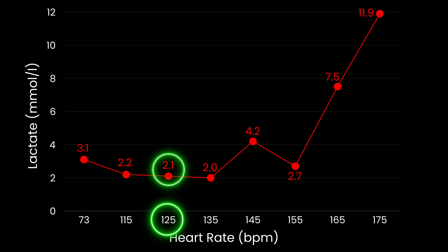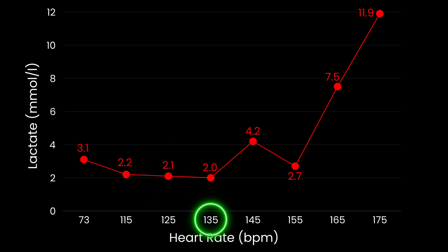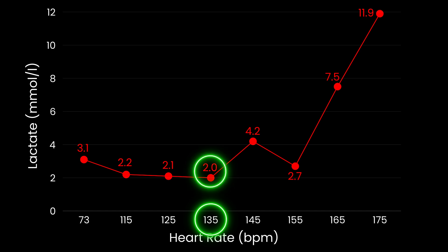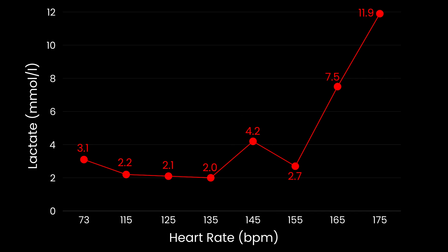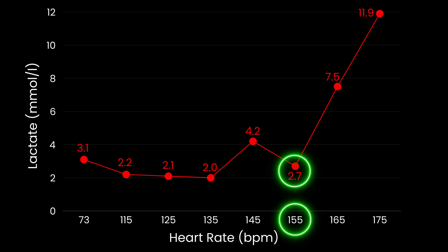When I got up to 125 beats per minute, my lactate dropped again to 2.1 millimoles per liter. At 135 beats per minute, my lactate started to stabilize at 2.0 millimoles per liter, which is the blood lactate ceiling for zone 2. When I took my heart rate up to 145 beats per minute, my lactate shot up to 4.2 millimoles per liter, but very interestingly, it dropped again pretty drastically back down to 2.7 millimoles per liter at 155 beats per minute.